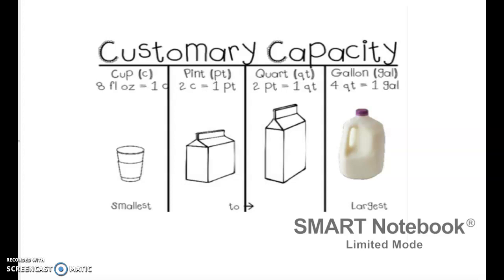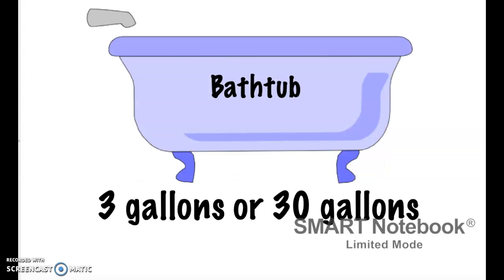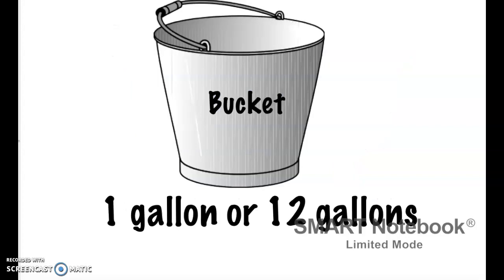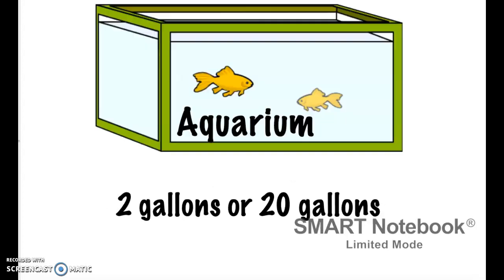Here we are actually going to decide which one would be the best estimate. In order to fill up this bathtub, is the best estimate three gallons or 30 gallons? So three milk jugs or 30 milk jugs? I would say 30 — three gallons is not going to be enough at all, you're going to be pretty chilly in there. A bucket — what's the best estimate, one gallon or 12 gallons? I would say one gallon. Twelve gallons is way too much and the bucket is going to be overflowing.